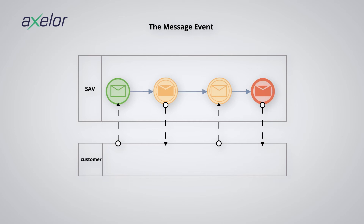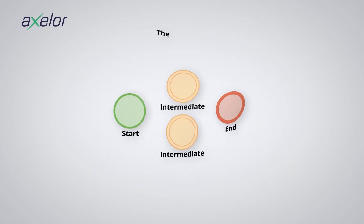A small clarification concerning the send and receive events: these type of events always exist in pairs. When there is a receive event, there is always a send event. This type of message should not be seen as an email or a mail, but as a characteristic element of the BPMN that looks like a token, but is transmitted between message events.